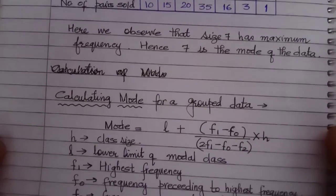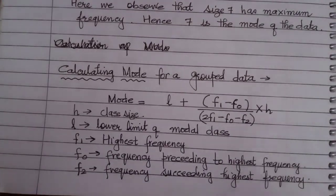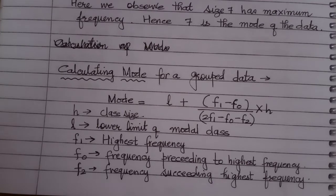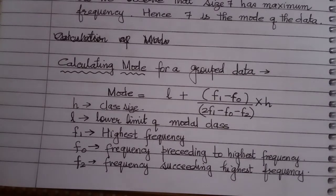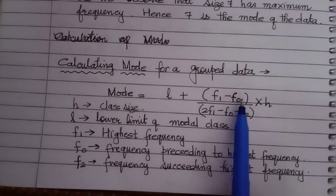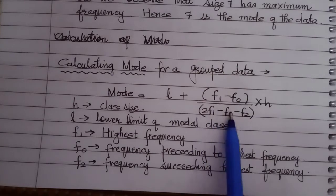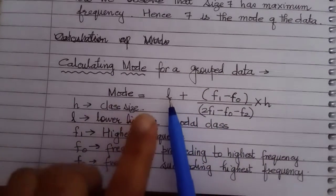Now what is there in our syllabus is calculating mode for a grouped data. Grouped data where class intervals and frequencies are given. We are not being provided with raw data. So there is a general formula: Mode = L + (F1 - F0)/(2F1 - F0 - F2) × h.